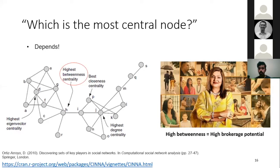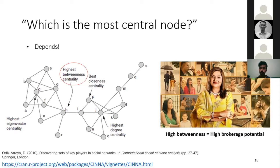Looking at the network, node H has very high betweenness centrality. But a key point to remember is that there is no single 'central' or 'important' node in a network. Your definition of an influencer or important node depends on what aspect of importance you're focusing on — that's the main takeaway from these slides on centrality.